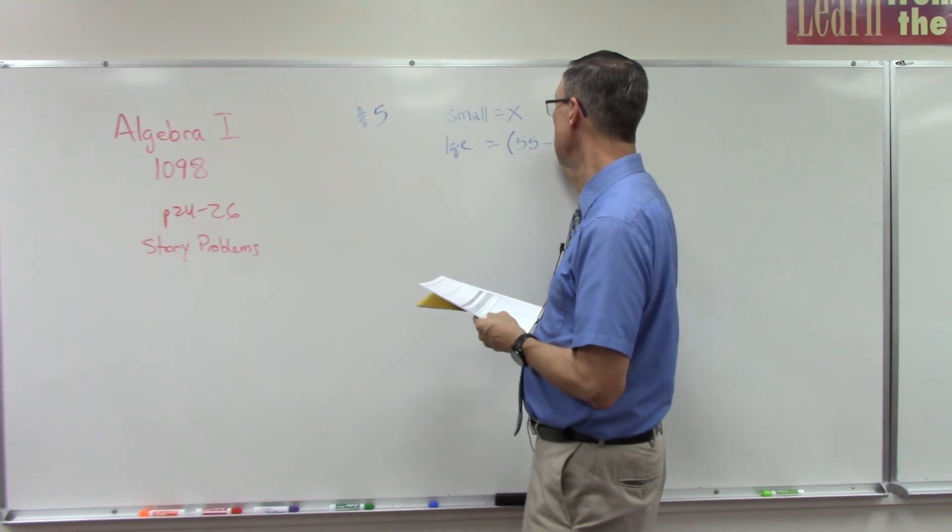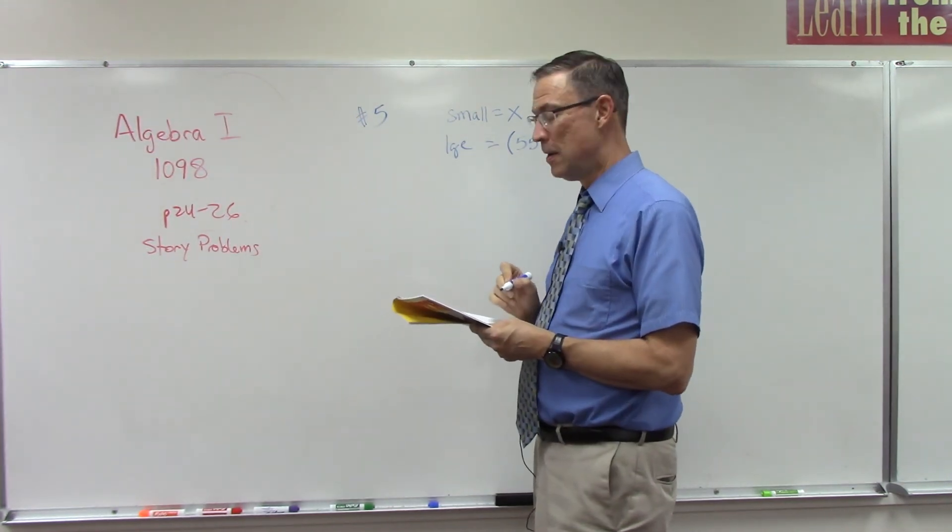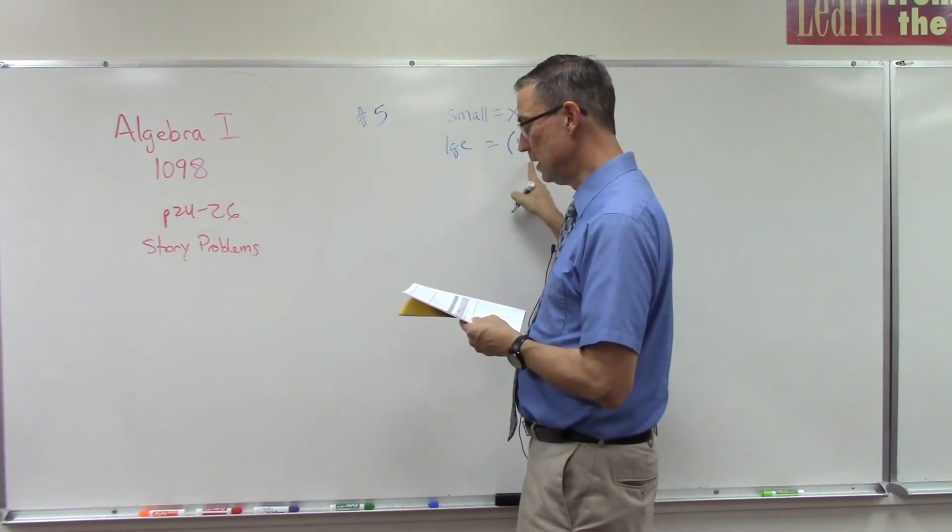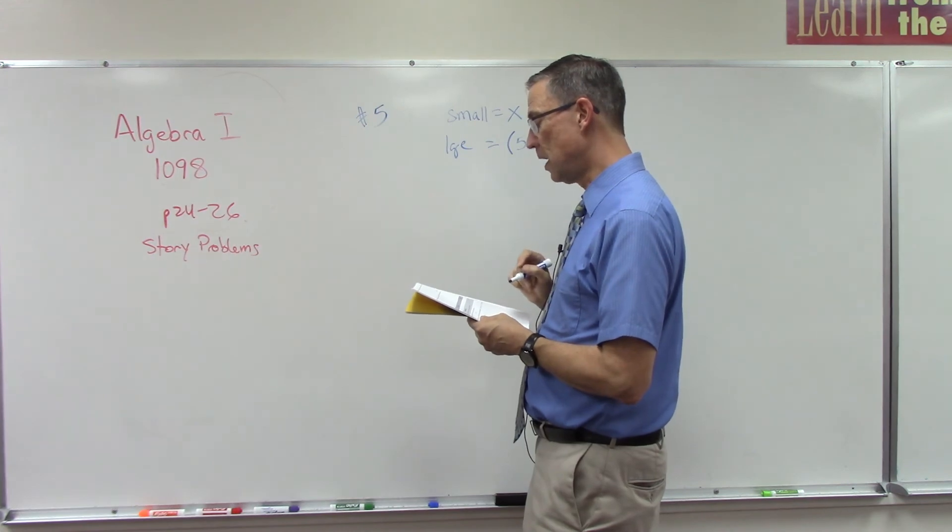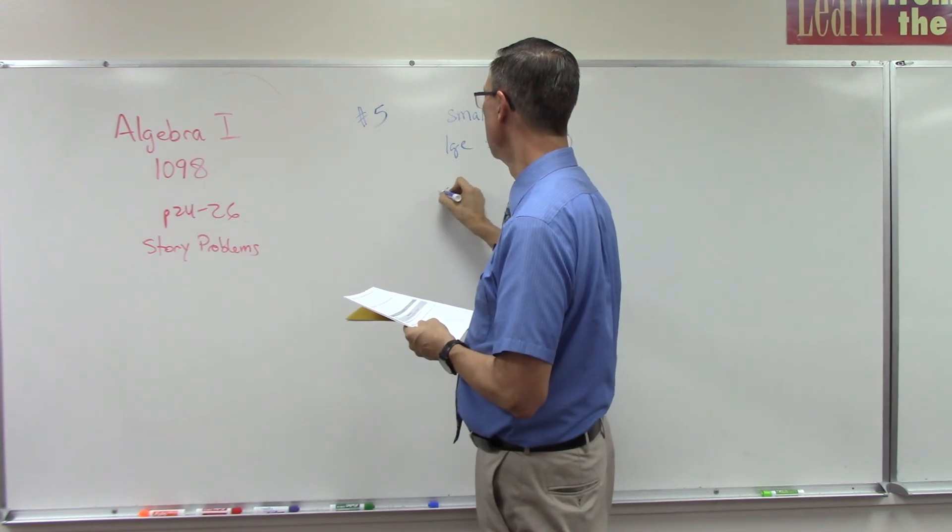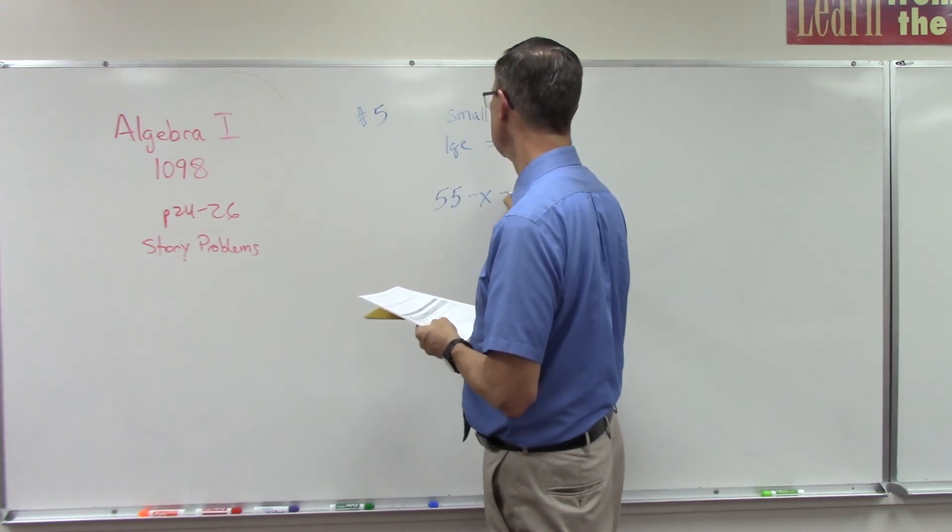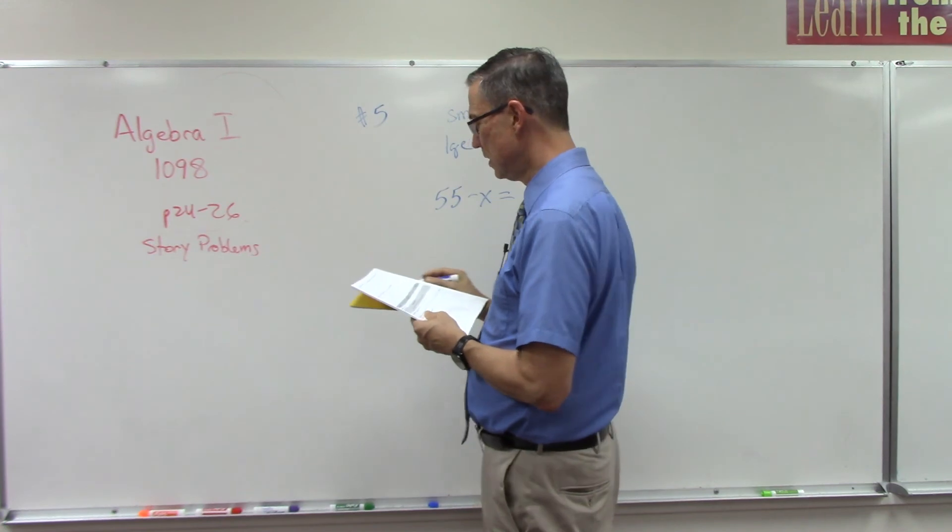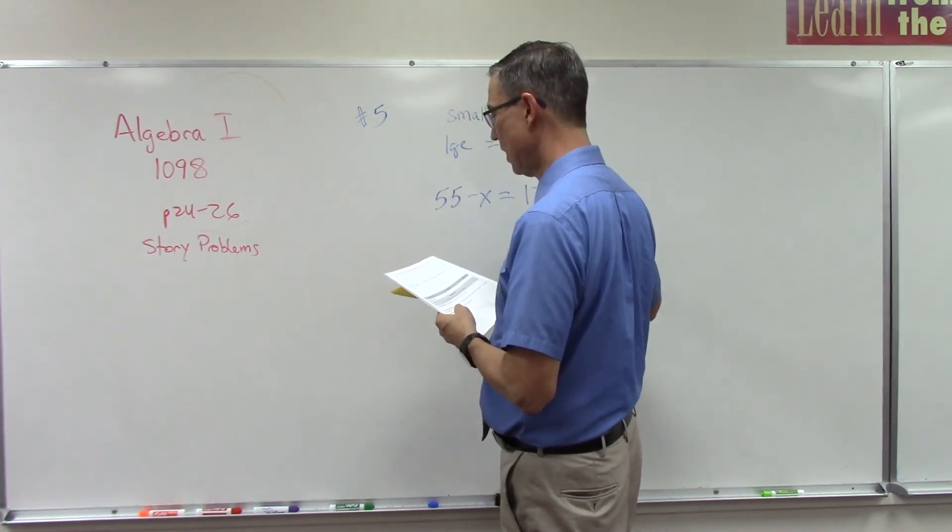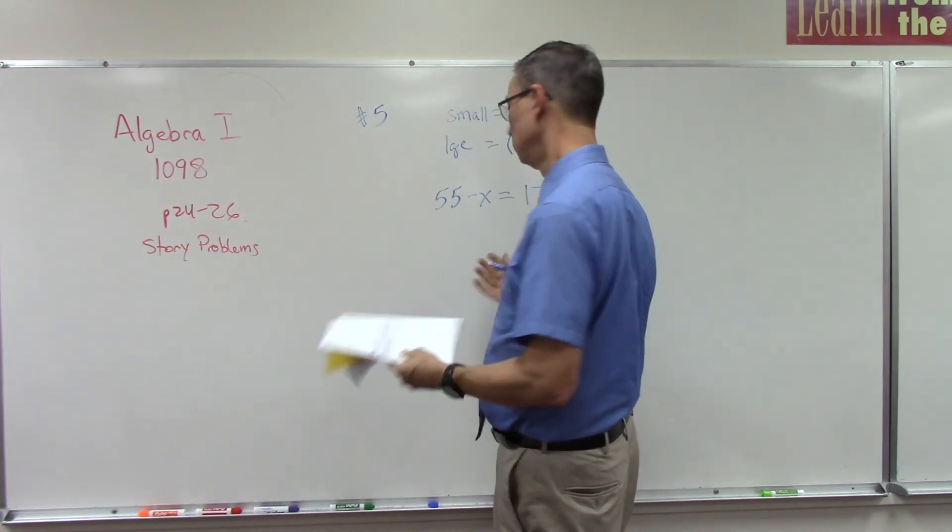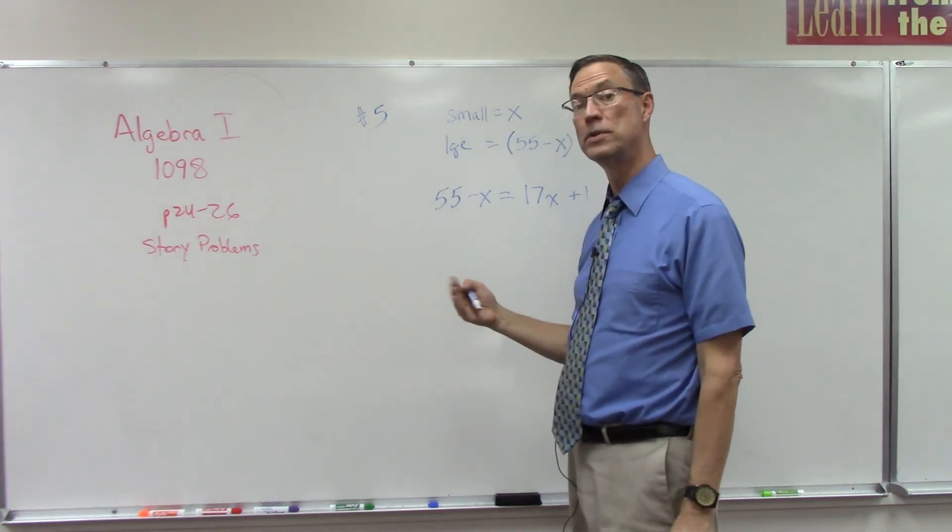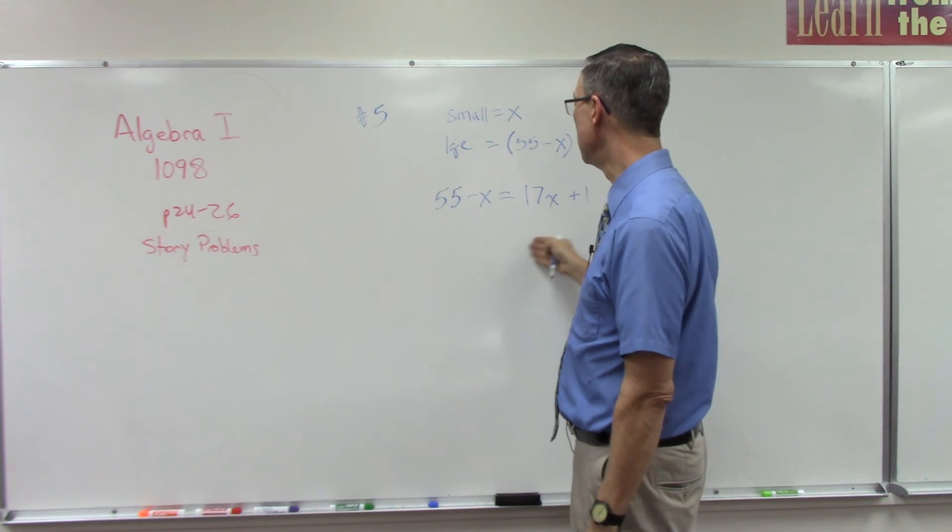Let's see what we're doing with it. It says the greater number is 17 times the smaller number. So the large number, 55 minus x, equals 17 times the small number, which is x, and then it says plus 1. Wow, we're done! Well, we're not done done, but it's done as far as I'm going to take you. From here then we have the equation; it's just a matter of putting it together to solve.